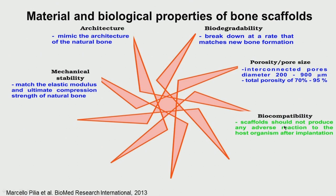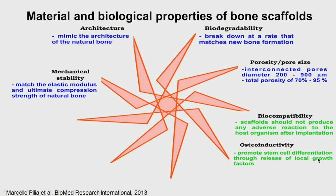Biocompatibility is essential — the material should not produce any adverse reaction to the host. Osteoinductivity means it should promote stem cell differentiation through release of local growth factors, perhaps by coating the surface to release those factors. Osteogenicity means it should produce new bone in the presence of osteoprogenitor cells, while also releasing growth factors for bone growth.